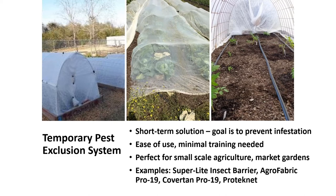There are many examples of fabric that can be used. These are polyethylene fabrics, for example: Superlite Insect Barrier, Agrofabric Pro 19, Covertan Pro 19, and ProtectNet. Some of these materials are long-lived and can be reused, while some may not be.